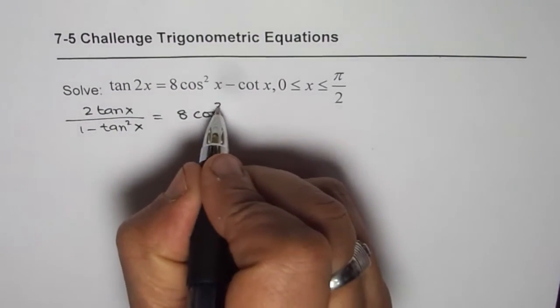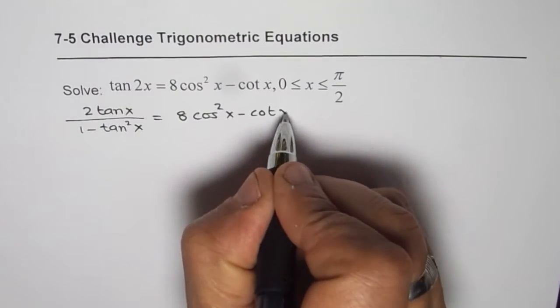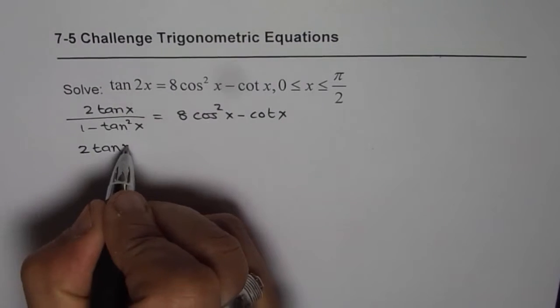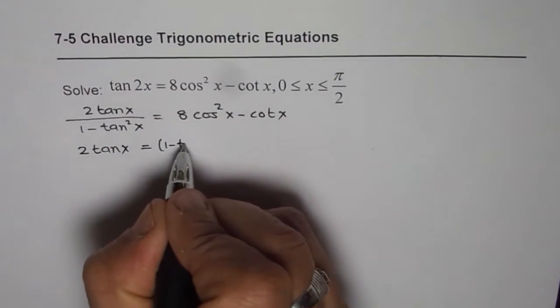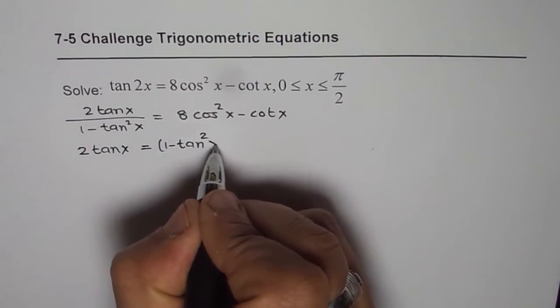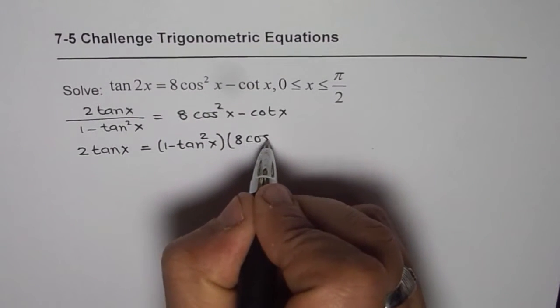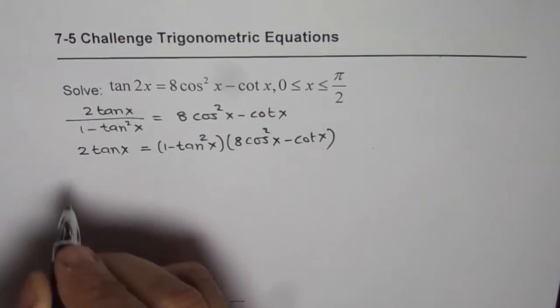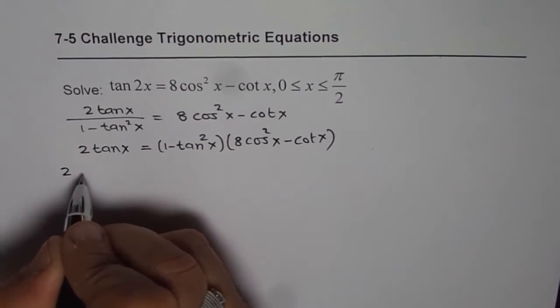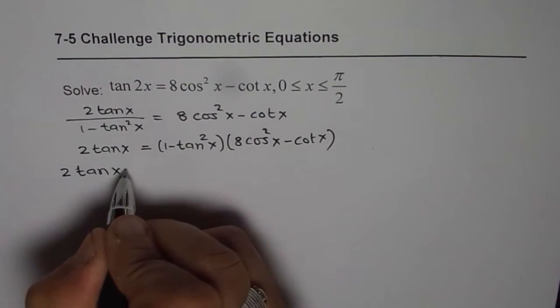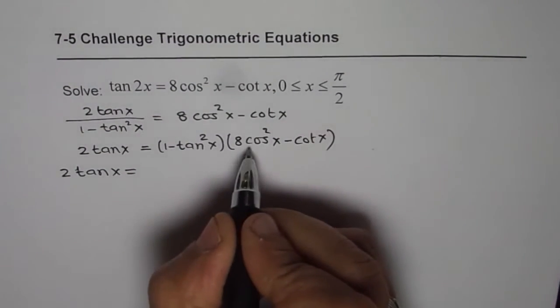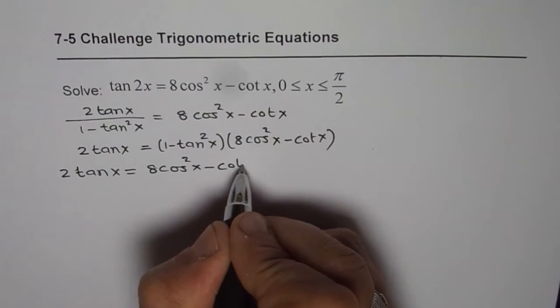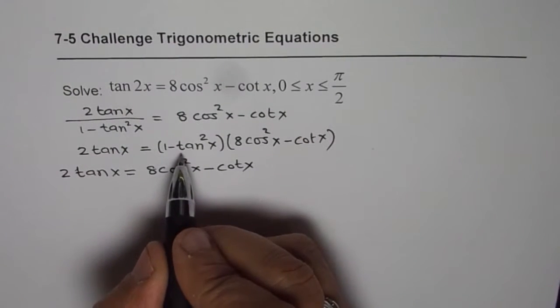Now we'll cross multiply, so we'll get 2 tan x equals 1 minus tan square x times 8 cos square x minus cot x. Let's open this bracket. I'm shifting this a bit more on the left side. 2 tan x equals, when I multiply by 1 I get both the terms as such, which is 8 cos square x minus cot x, multiplying by minus tan square x.